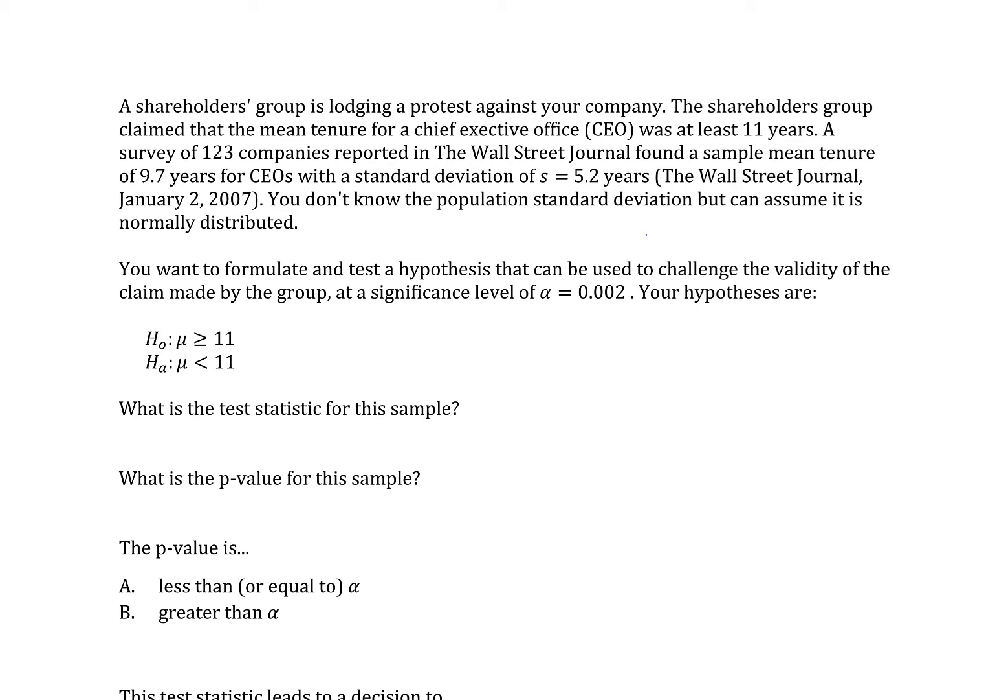You don't know the population standard deviation, but can assume it's normally distributed. You want to formulate and test a hypothesis that can be used to challenge the validity of the claim made by the group at a significance level of alpha equals 0.002. Your hypotheses are the null hypothesis H0 is mu is greater than or equal to 11, and the alternative is mu less than 11.